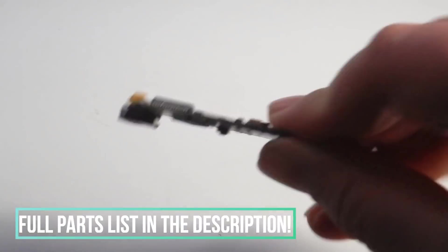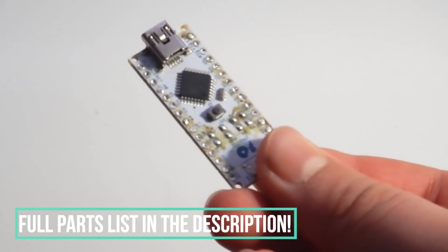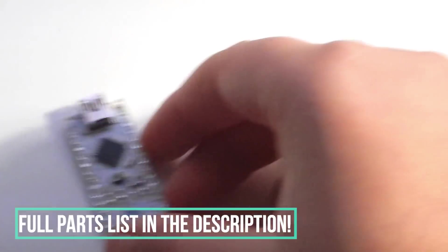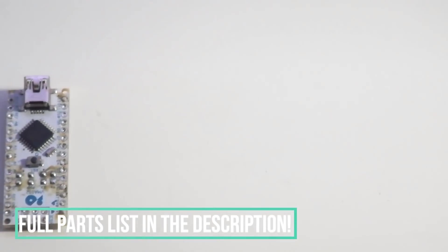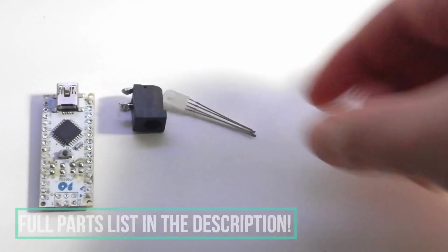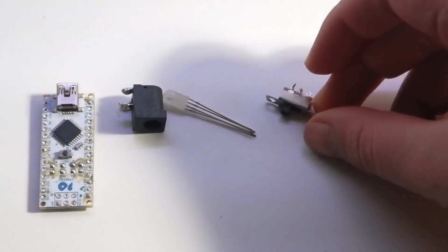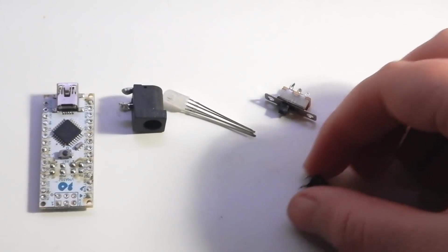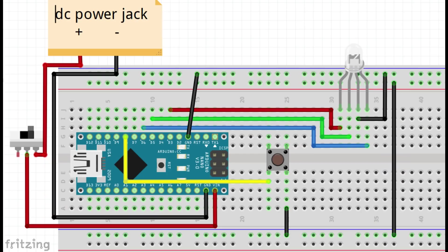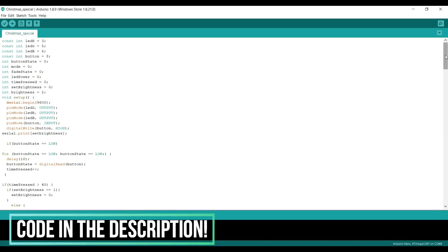Now gather all the components and unsolder the pins from the Arduino. Now that you've got all the components, you can solder them together as shown and upload this sketch, which, as always, can be found in the description.